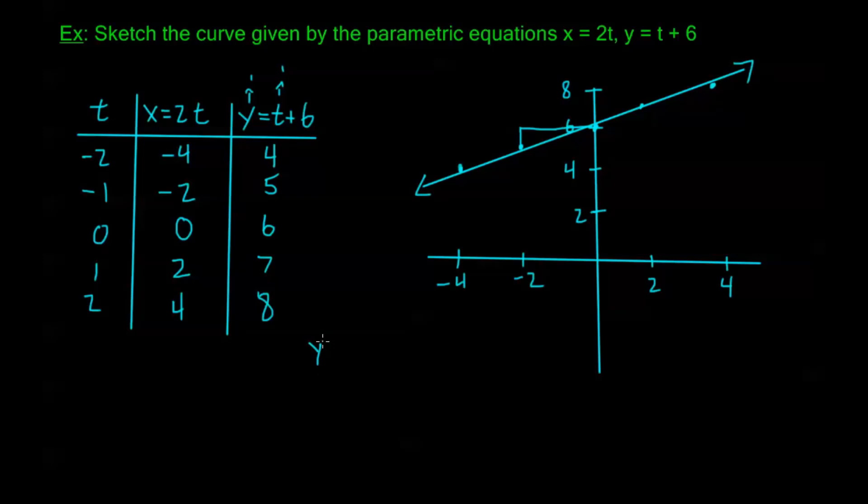So let's go ahead and get started. I have that y equals t plus 6. And so if I try to solve for t here, that's going to give me t is equal to y minus 6. So now I have t.